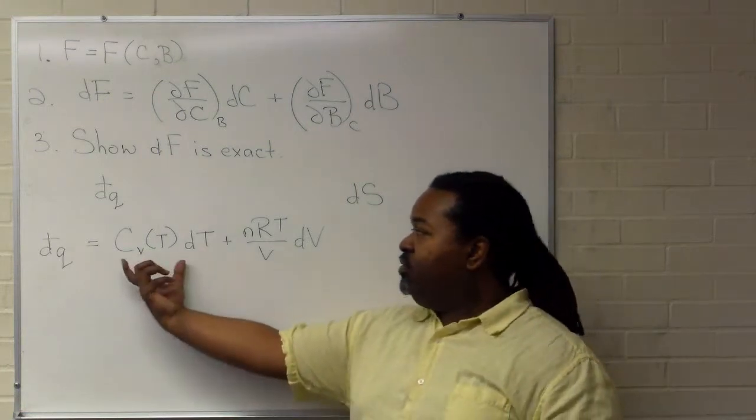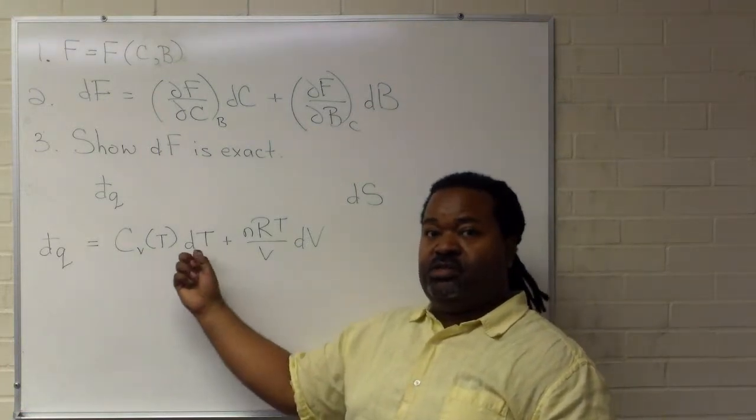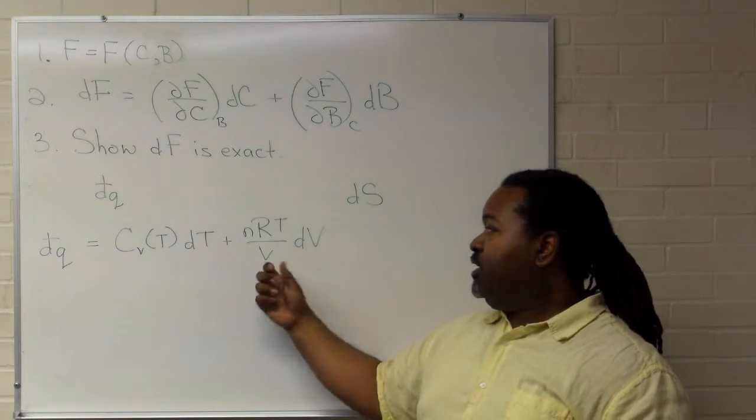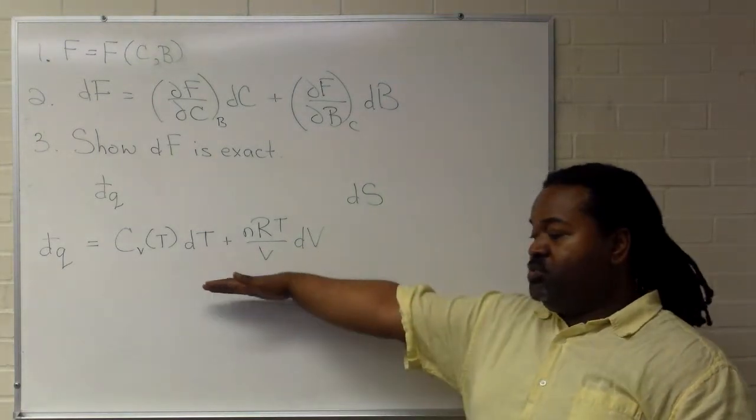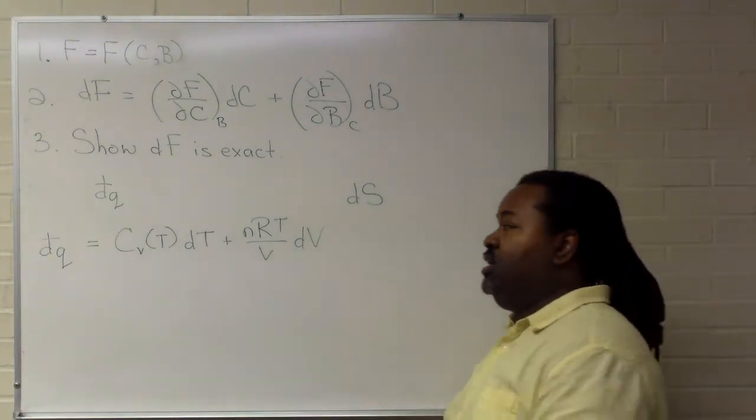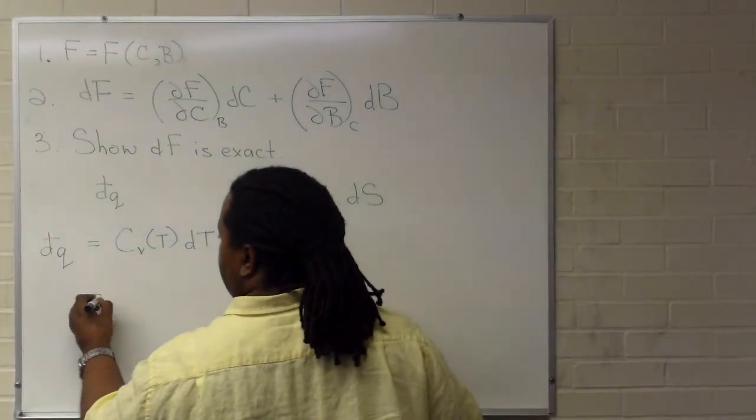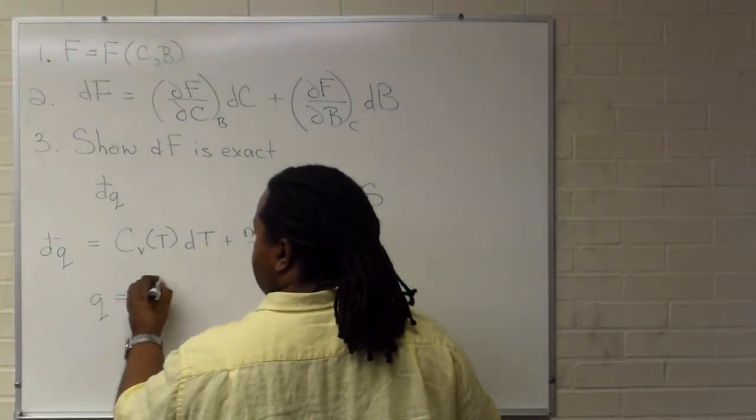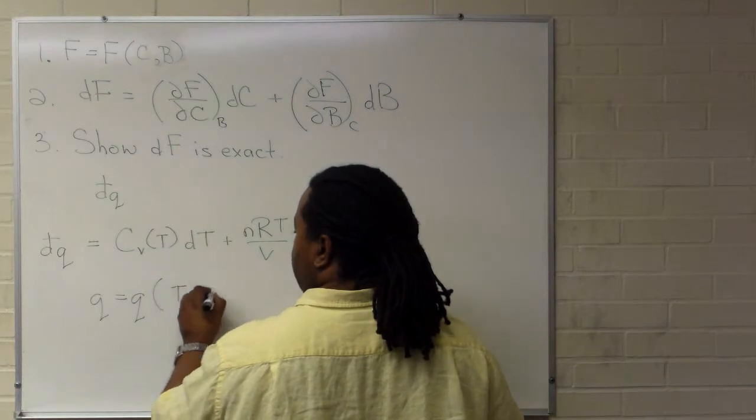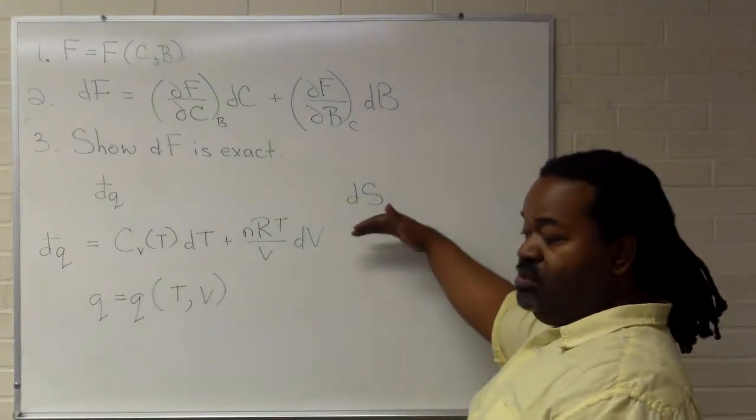we find that we have function of temperature, dt, function of temperature and volume, dv. This renders this as being an inexact differential. So this is a function of t and v, when we take the partials, we take what we need.